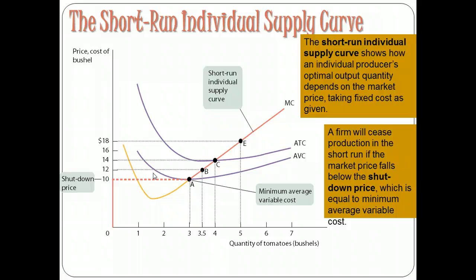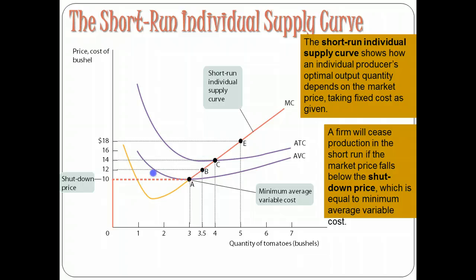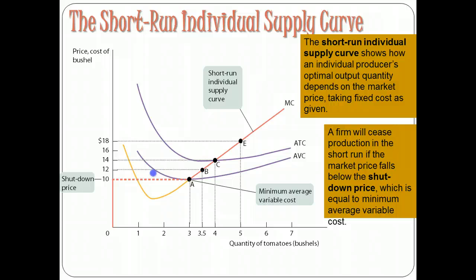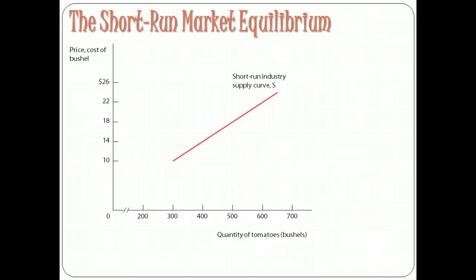Once we have a handle on the short-run behavior of the individual firm, we can look at the behavior of the market as a whole and create a short-run supply curve. By assuming every firm has the same cost structure, we can assume that if the price is $10, every firm will produce three bushels each. So if there were 100 firms, the market would have 300 bushels of tomatoes. And if the price were $18, the marginal revenue curve crosses the marginal cost curve at five bushels, so 100 firms times five bushels gives us 500 bushels of tomatoes at an $18 price. We can take that information and build a short-run industry supply curve.